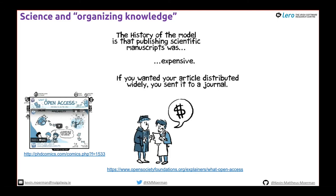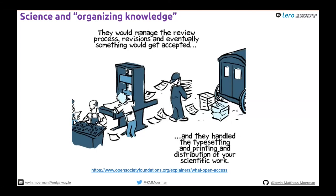So are we doing a good job at that currently? The history of the model is that publishing scientific manuscripts is expensive — you send your article to a journal, they manage the review process and revisions, and eventually accept something publishable. Peer review is actually fairly recent: in the 1970s the Lancet and Nature started requiring peer review. So it's a recent invention in that sense — it has only recently been adopted by the big players.